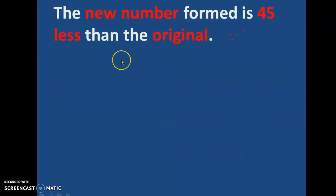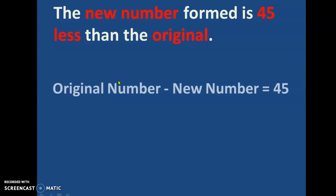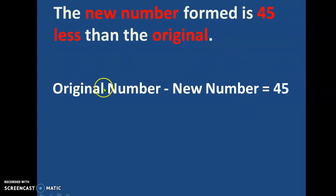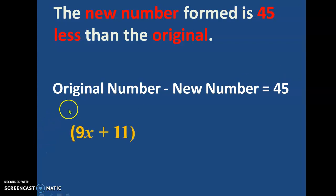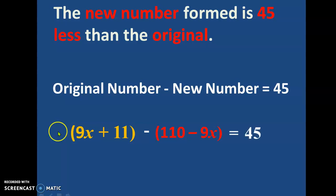Now what is given in the problem? It is given that the new number formed is 45 less than the original number. So let us write down the equation: original number minus the new number is equal to 45, since the new number is smaller than the original by 45.